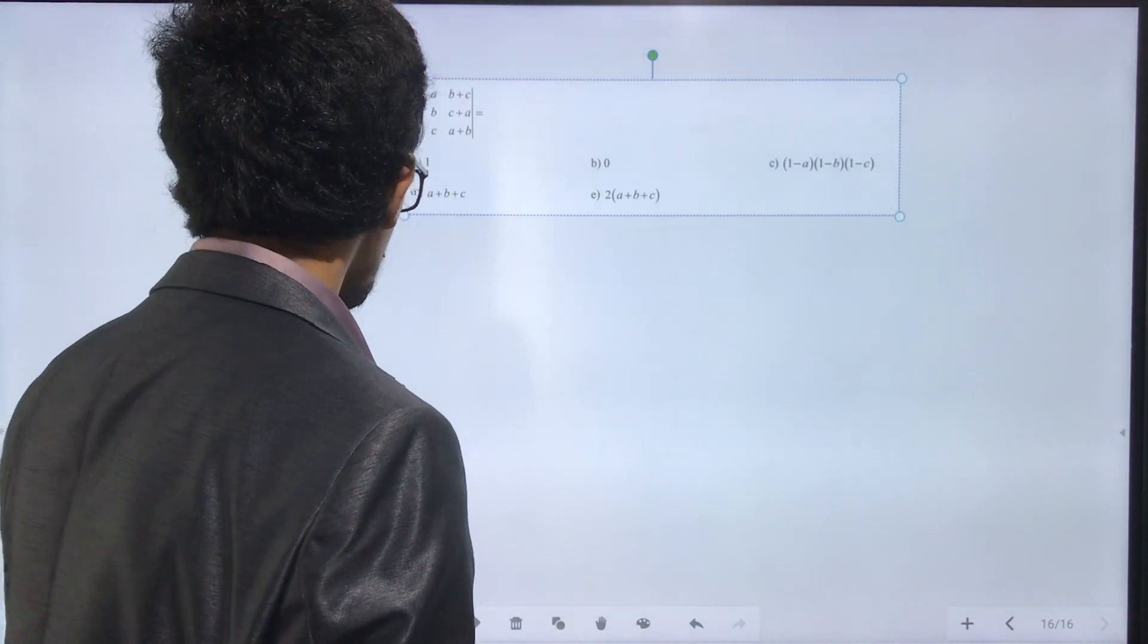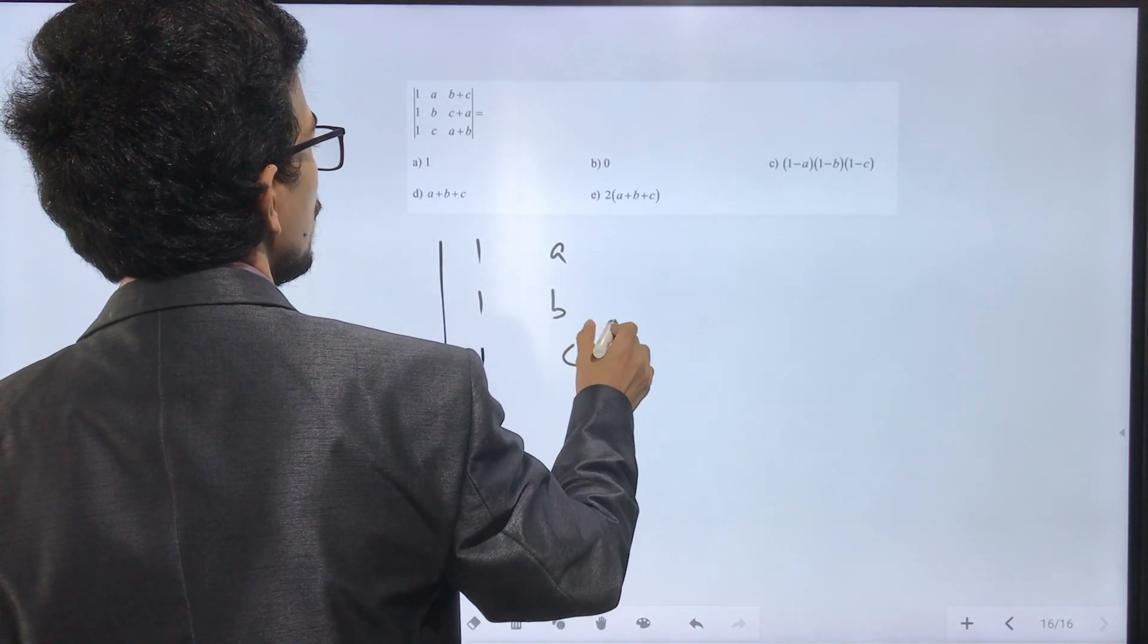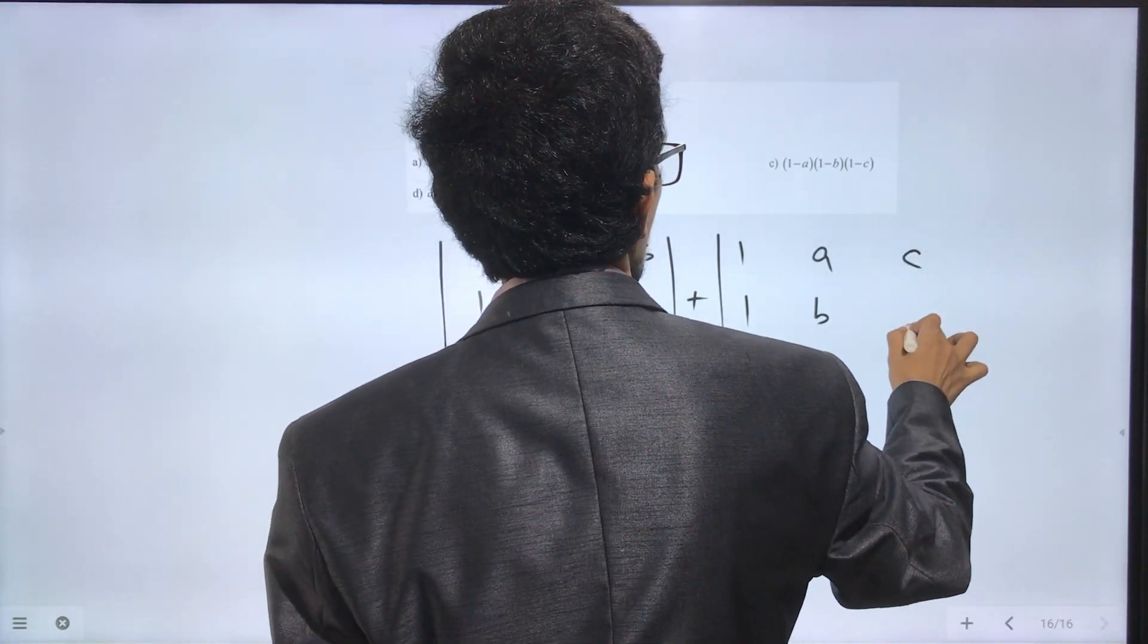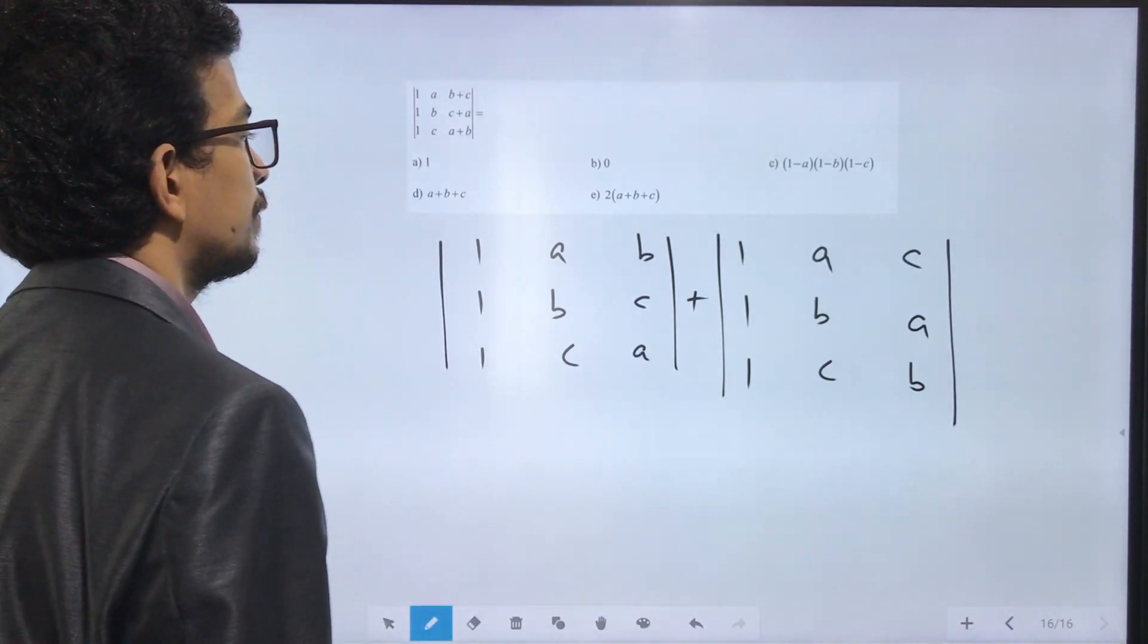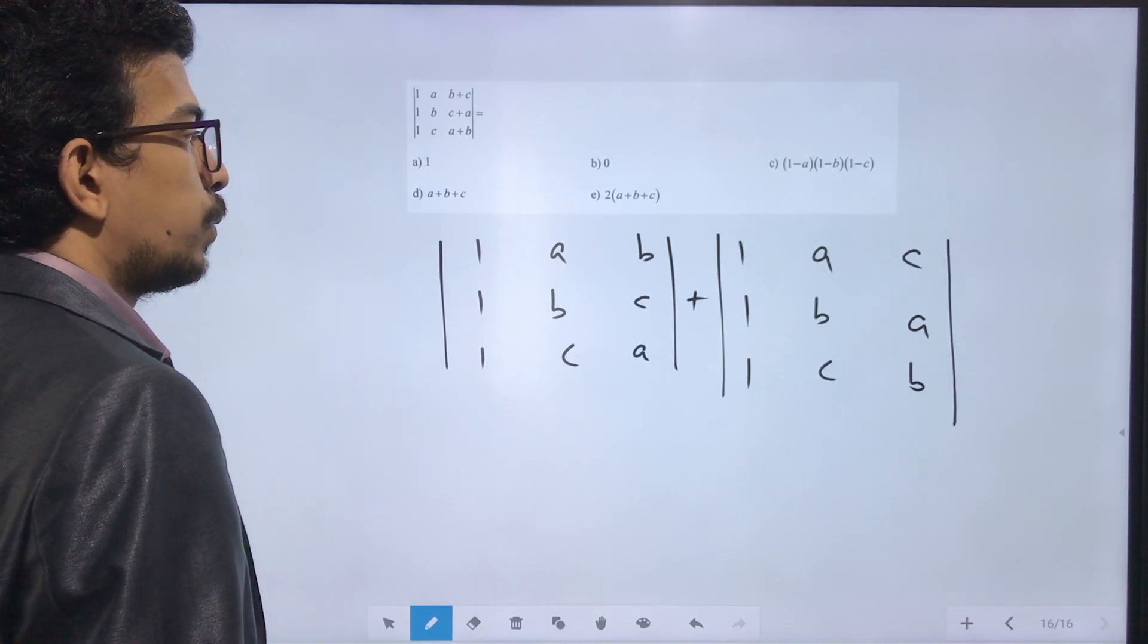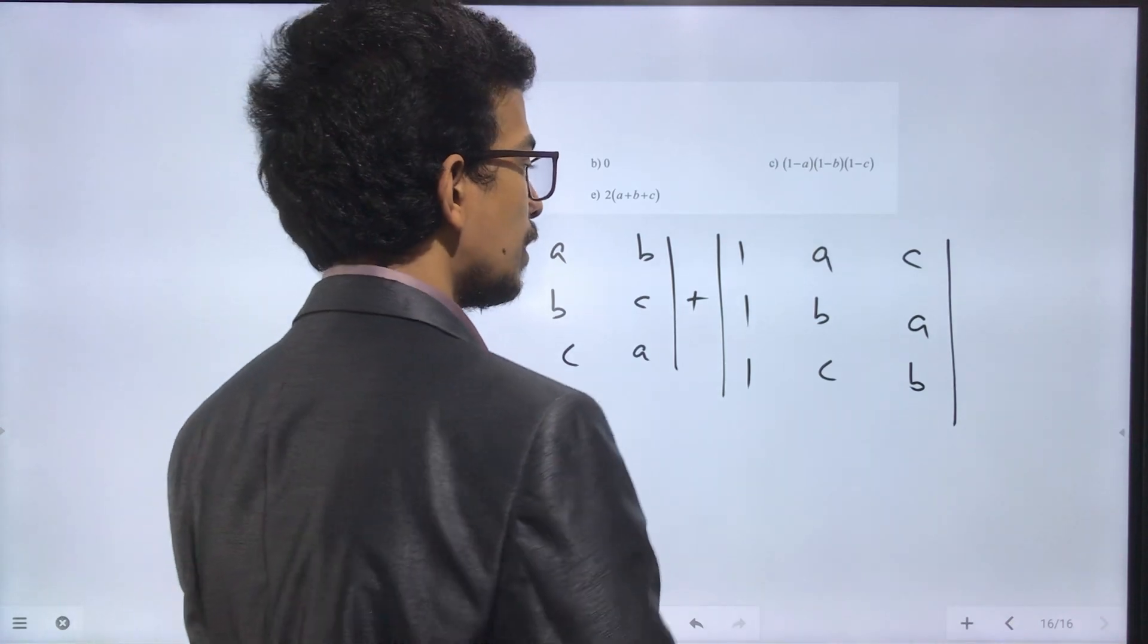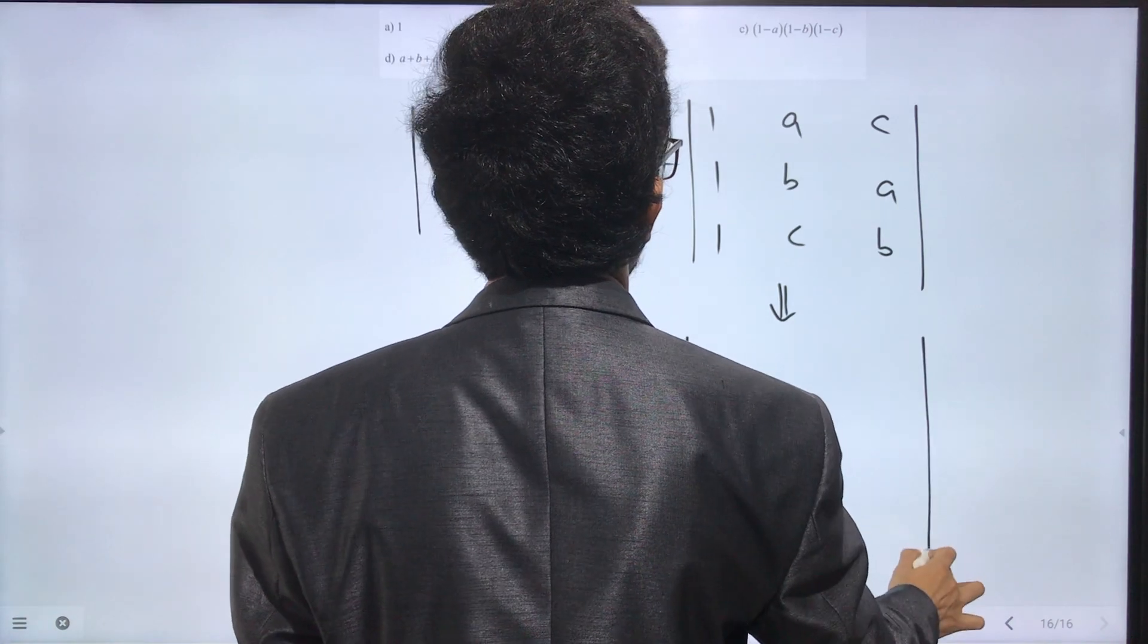Problem 114: determinant with 1, a, b in rows, and the formula gives us determinant [1,1,1; a,b,c; b,c,a] plus determinant [1,1,1; a,b,c; c,a,b]. Since it's a determinant formula, I will multiply. We can cyclically shift to transform the determinant values.